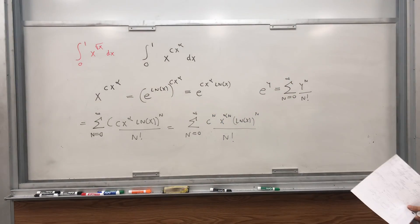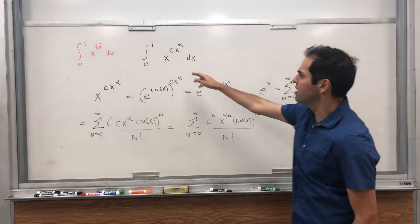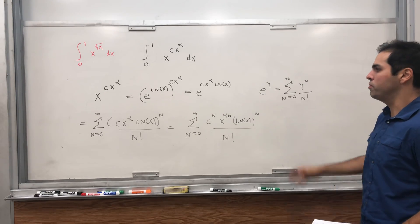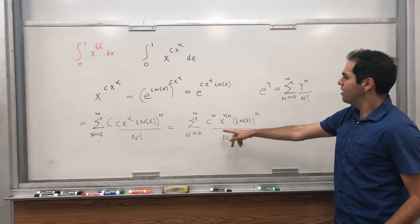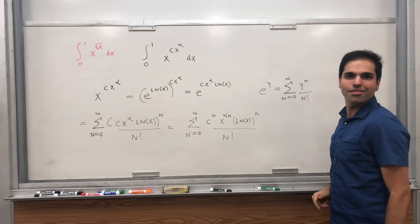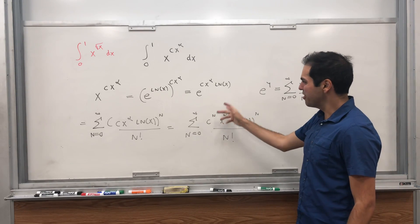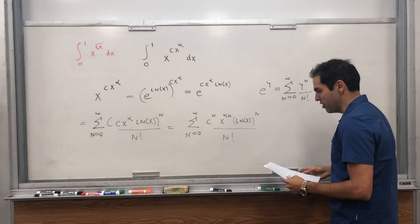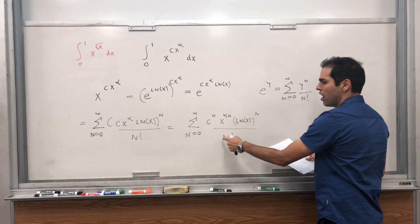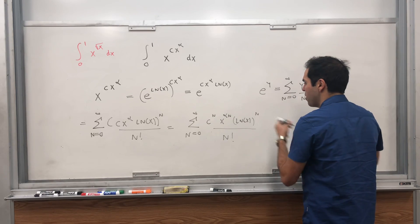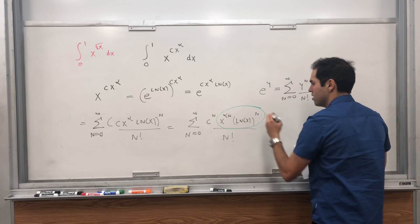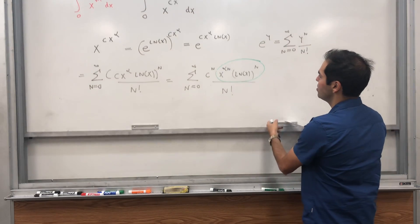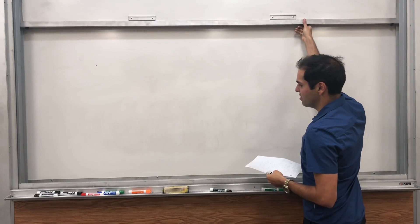The only thing we need to do to calculate the integral is integrate this expression term by term, because the radius of convergence is infinity, so the Taylor series can be integrated term by term. This is a constant, this is a constant — let's focus on the key part. So now let's do the integral of x to the alpha n times ln of x to the n.